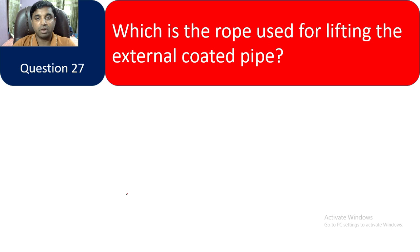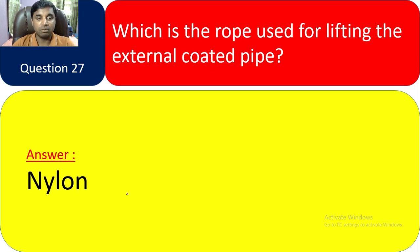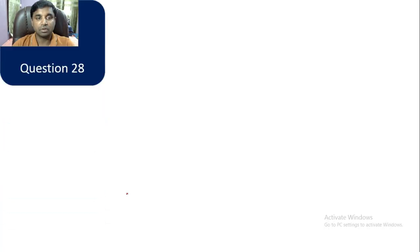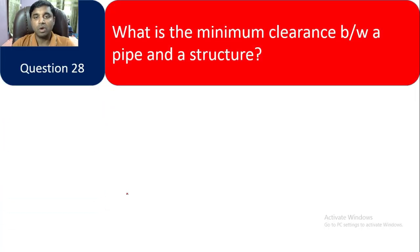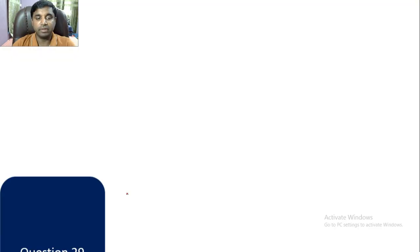Question 27: What type of rope is used for lifting externally coated pipe? A nylon rope is used. Question 28: What is the minimum clearance between a pipe and a structure? The minimum clearance is 550 mm.